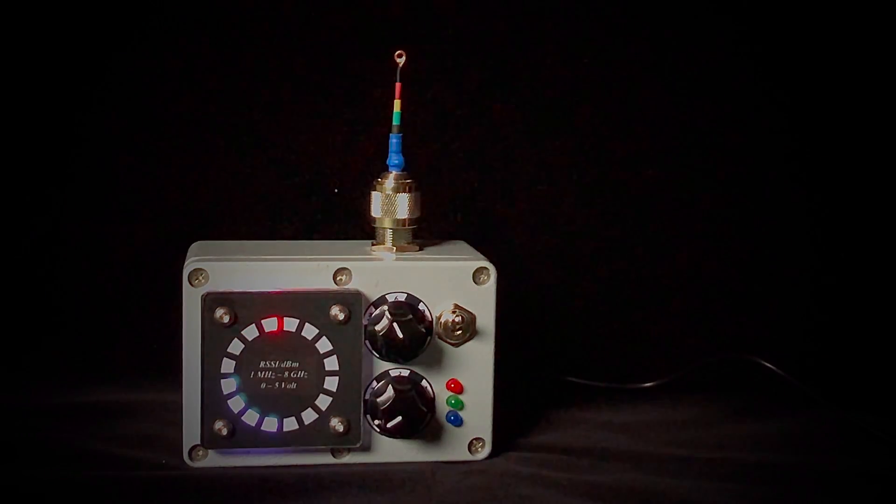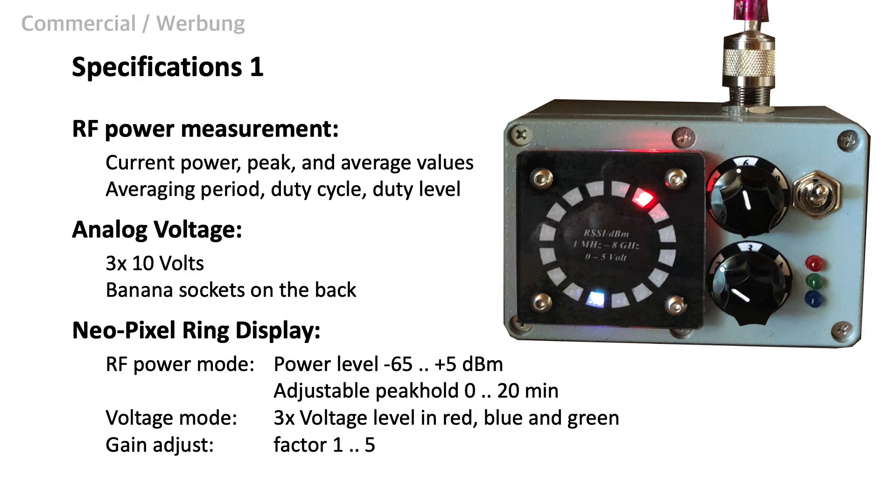With the lower knob we can increase the gain for the display. In the demonstration we saw already some capabilities for RF power measurement and the simultaneous voltage measurements. I need to add that the displayed power is between minus 65 dBm and plus 5 dBm. We can adjust the display gain from a factor 1 to 5. It has an effect on both the voltage and the power measurements. OK these are the main features and the specifications but wait there is one more thing.